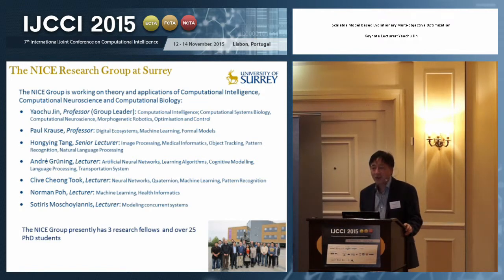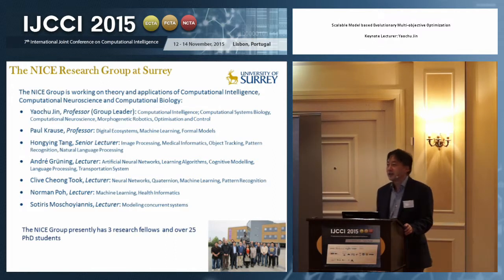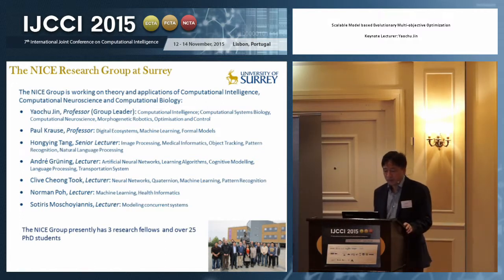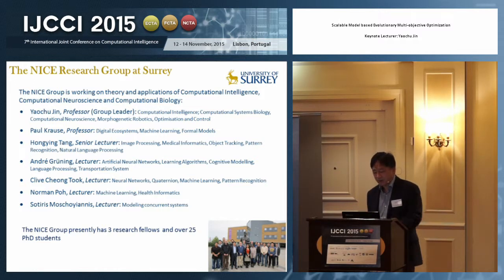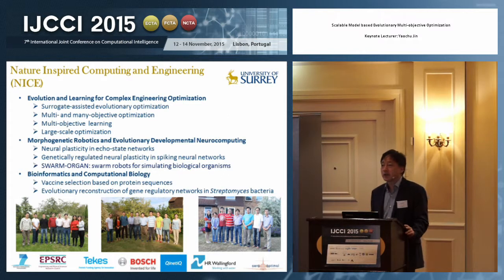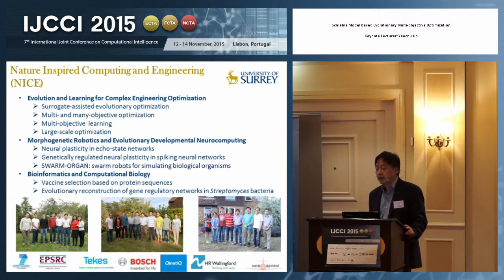We have this Nature Inspired Computing and Engineering group at Surrey. We currently have seven academic staff, as well as research fellows and PhD students. Our main activity is working on evolution and learning for engineering design optimization — that is one of our main topics.